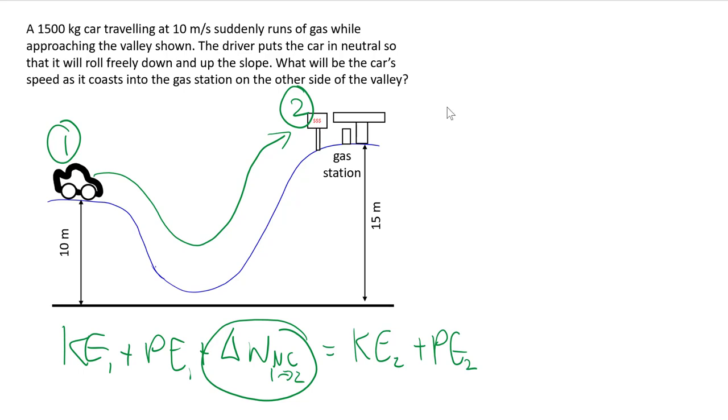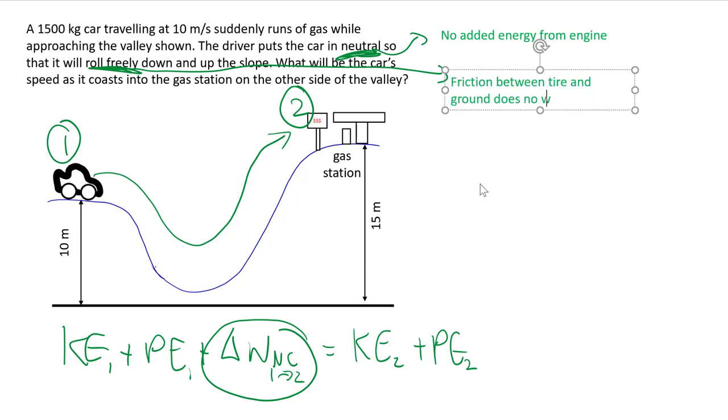So we are told a few things. The car is in neutral is their way of saying that there's no added energy from the engine. And then it also rolls freely. So that's their way of saying the friction between the ground and the tire goes towards rolling the wheel. We'll talk about rolling in a few weeks. And the freely implies that there's no significant friction between parts of the car, like the axle and the bearing.